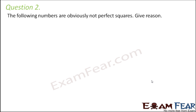Question number 2: The following numbers are obviously not perfect squares. We know that they are not perfect squares; we just need to give the reason why they are not perfect squares. We have discussed a few rules which help us to decide whether a number is a perfect square or not. So let's quickly recall those rules.